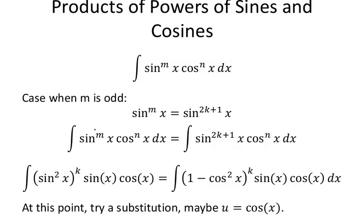We will rewrite sine to the m power as sine to the 2k times sine to the 1 — the 2k plus 1. This 2k and the plus 1 can actually be rewritten as sine of x to the first times sine squared to the k. You could take that 2k and bring the 2 over to make it sine squared. It's still sine squared, and you have a product of powers here.